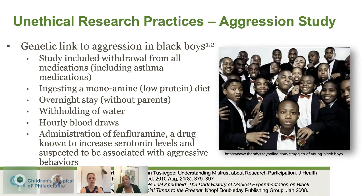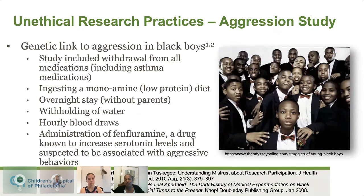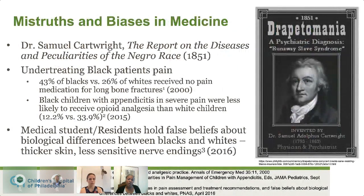Moving even closer to present day, there was a study in the 1990s looking at the genetic link to aggression in Black boys. This study required withdrawal from all medications including asthma medication — very prevalent in the Black community — ingesting a low-protein diet, overnight stay without parents for boys ranging from 7 to 12 years old, withholding water, hourly blood draws, and administration of fenfluramine — part of the drug fen-phen pulled off the market, known to increase serotonin levels and be associated with aggressive behaviors.